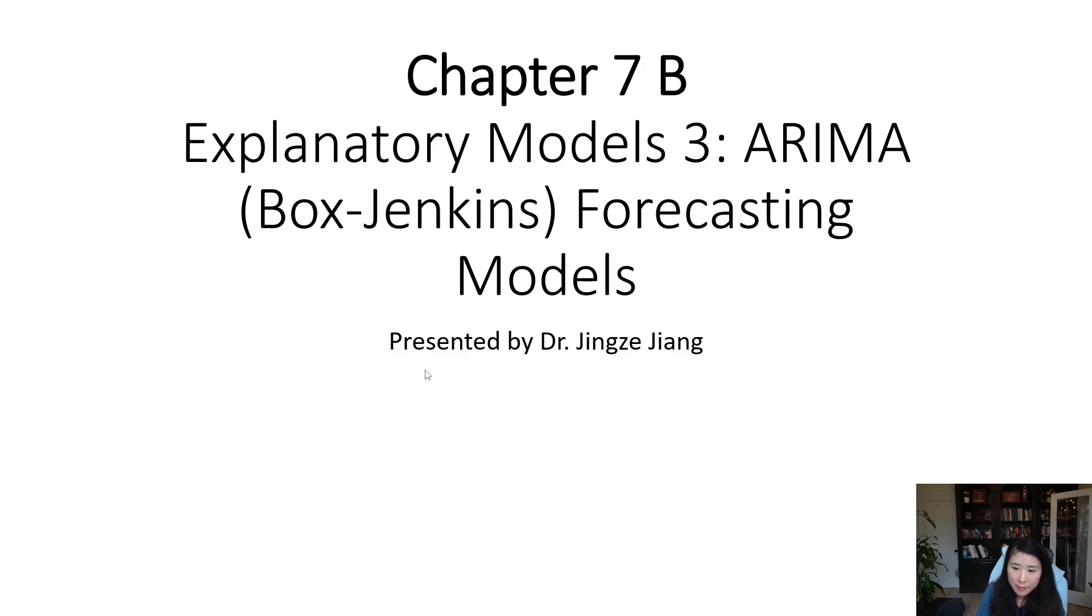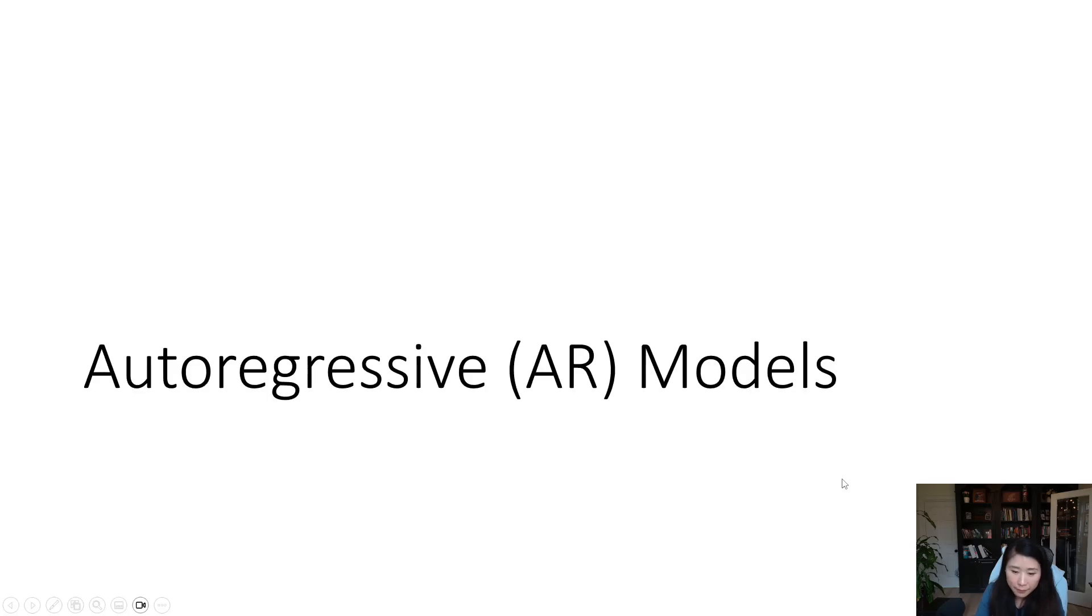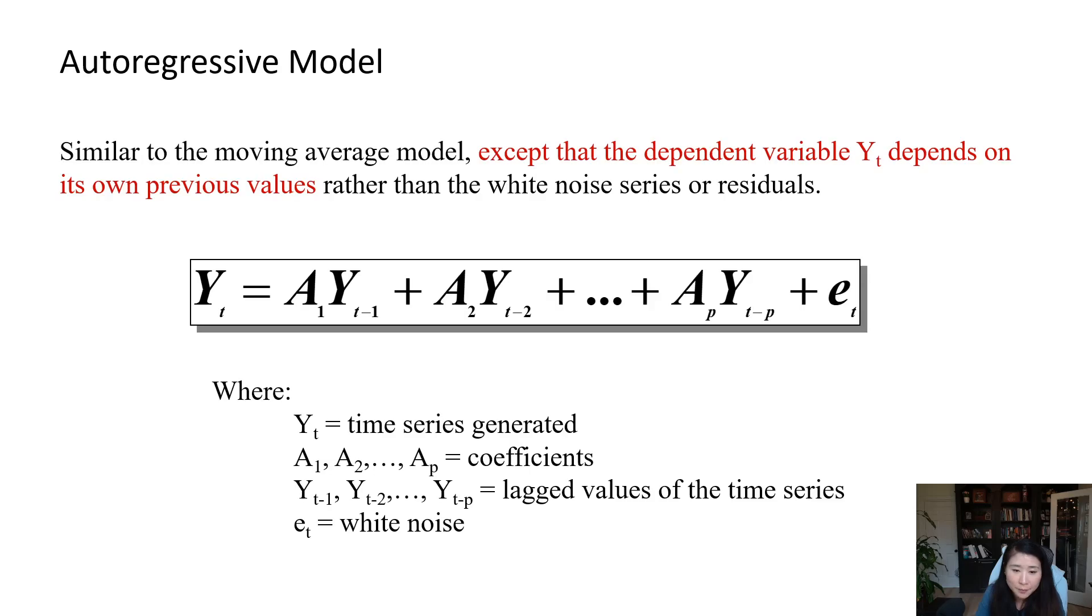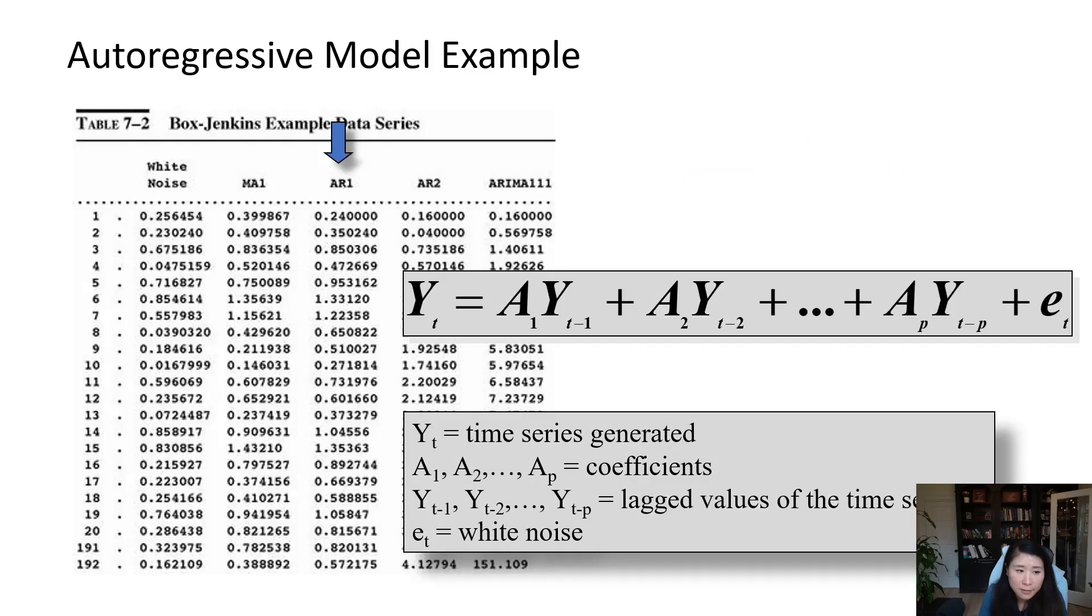In this video we're going to focus on the AR term. The AR term is our autoregressive model. This autoregressive model looks very similar to what we see in the MA model. The big difference is what we are seeing on the right hand side. In the MA model, the right hand side contains the white noises or residuals. However, in the autoregressive model, on the right hand side is the time series itself. The dependent variable Y depends on its own previous values.